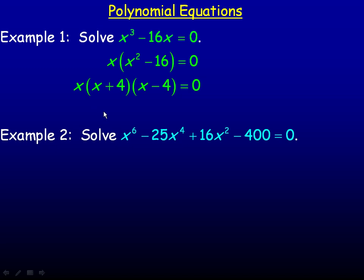Either this one has a value of 0 or this has a value of 0 or lastly the x minus 4 has a value of 0. And the value that makes that 0 would be 4 because 4 take away 4 makes a value of 0. So, the solutions are x is either 0 or plus or minus 4.